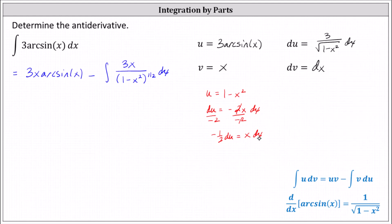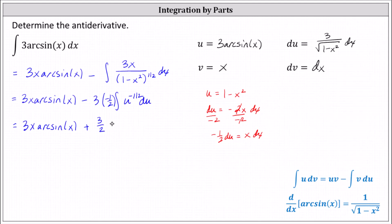Now let's write the integral with respect to u. Factoring out the 3, and substituting x dx equals negative 1 half du, we factor out the negative 1 half. We're left with 1 divided by the quantity 1 minus x squared to the power of 1 half, where 1 minus x squared equals u, so 1 divided by u to the 1 half equals u to the power of negative 1 half. This becomes plus 3 halves times the integral of u to the power of negative 1 half du.